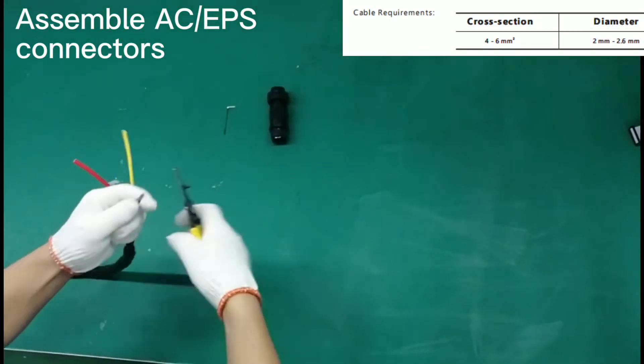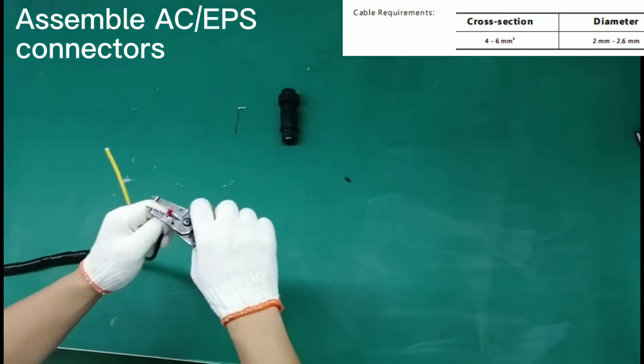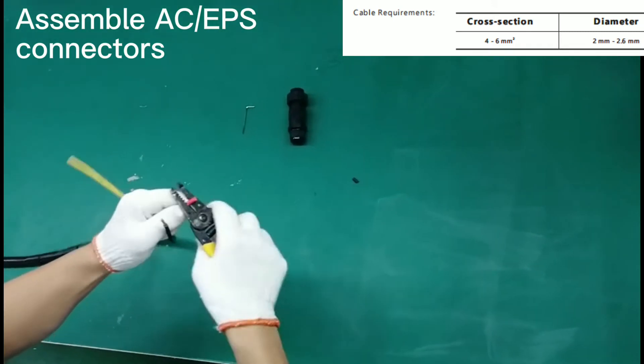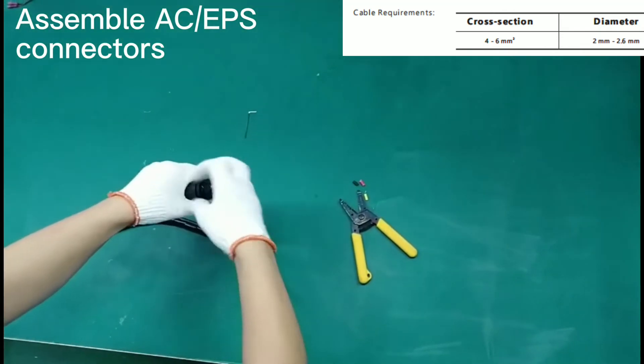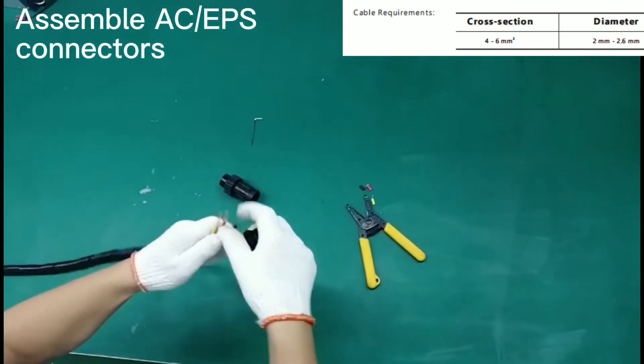Assemble the AC connector now. Lead the AC cable through cable gland, seal ring and threaded sleeve.